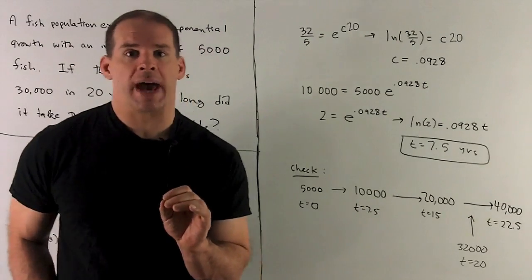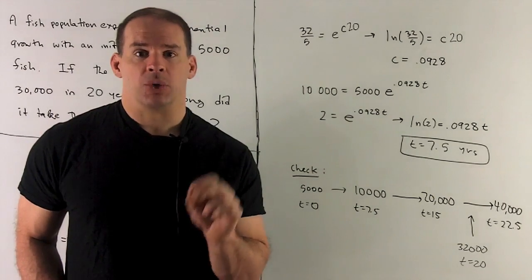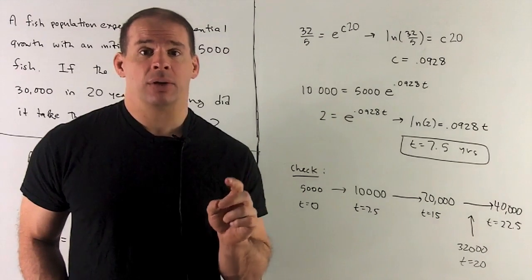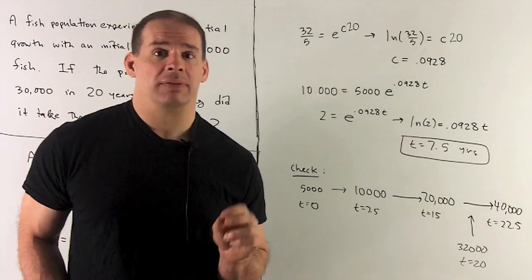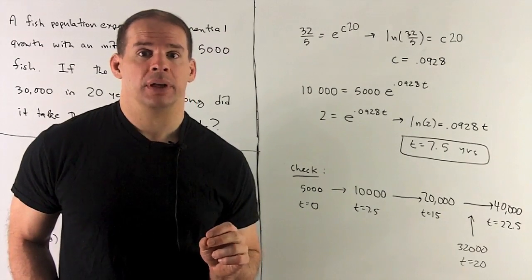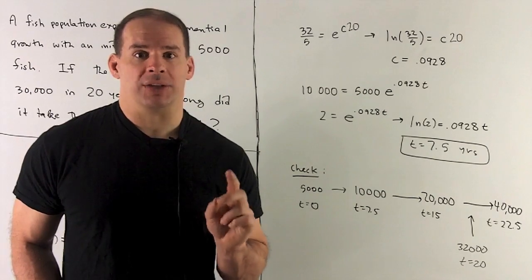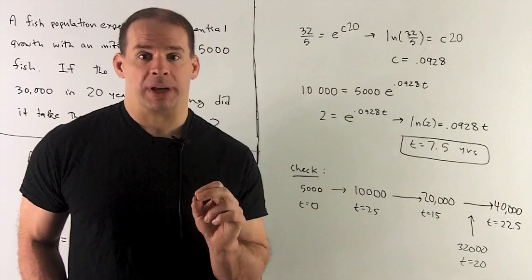We move the 5,000 to the other side. Now we have an exponential in our equation, so I apply natural log to both sides. Natural log of e to the anything reduces to your anything. So we're going to have 20 times c equals natural log 32 over 5. We solve for c, we get 0.0928. So I have my A₀ and my c for my exponential equation.